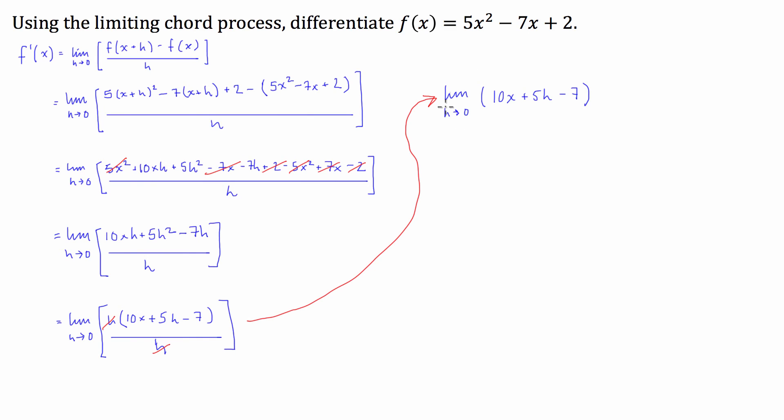We now have the limit as h approaches 0 of 10x plus 5h minus 7. So then what we're going to do is we're actually going to take h equal to 0, or take h towards 0, and what we're going to find is, well, this one here is going to equal 0. So effectively, it can cancel out.